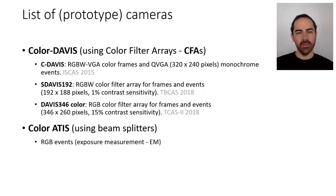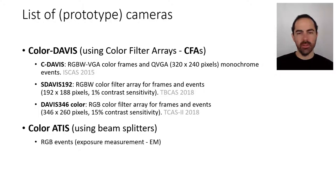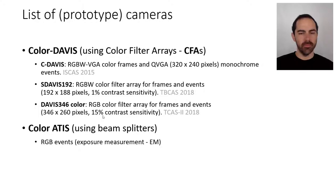These pixels also have a higher contrast sensitivity — instead of 15%, it goes down to 1%, which is roughly superhuman performance (human contrast sensitivity is about 1–2%). More recently we have the Davis 346 color, a camera that has an RGB color filter array on the pixels, working for both frames and events. Its resolution is 346 by 260 pixels with the regular contrast sensitivity of the DVS. These are the family of sensors that stem from the DVS and Davis.